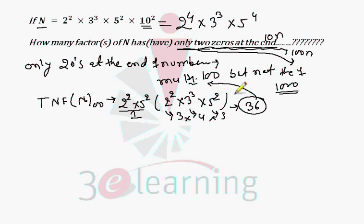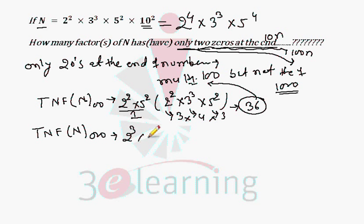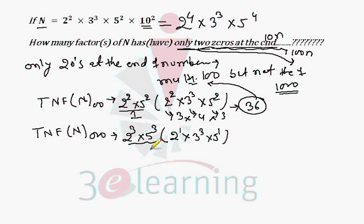Now find the multiples of 1000. Total number of factors of n ending with triple zero — take out 1000, which is 2 cubed and 5 cubed. We are left with 2 to the 1, 3 cubed, and 5 to the 1. The chances: 1 compulsory, 2, 4, and 2. So total chances are 16.